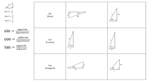By the end of this lesson, you should be able to use the trigonometric ratios sine, cosine, and tangent to find a missing side of a right triangle. We're going to practice using each one — sine, cosine, and tangent.